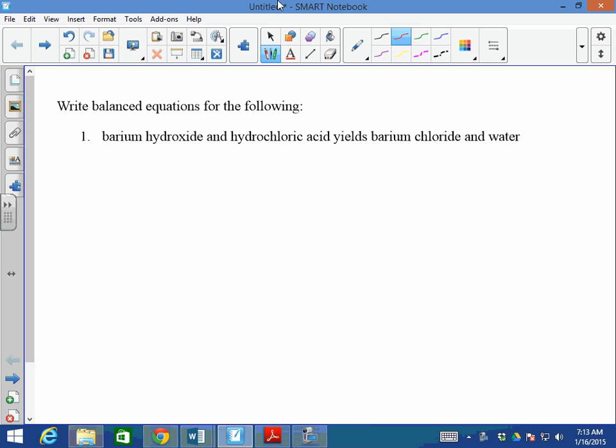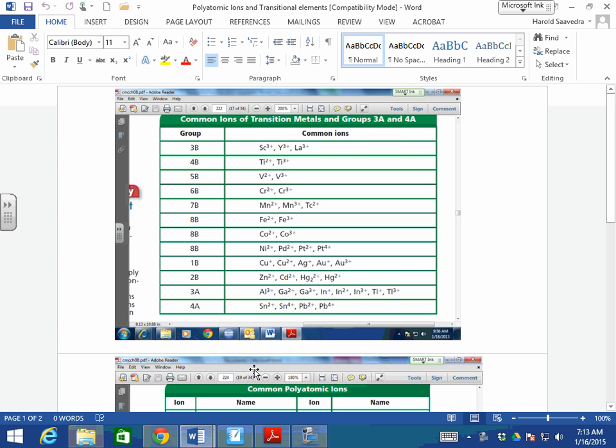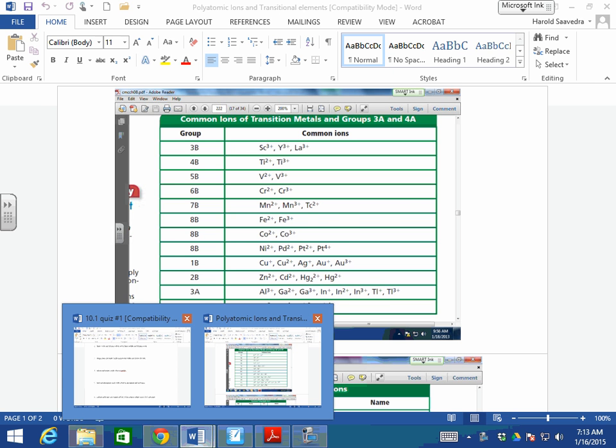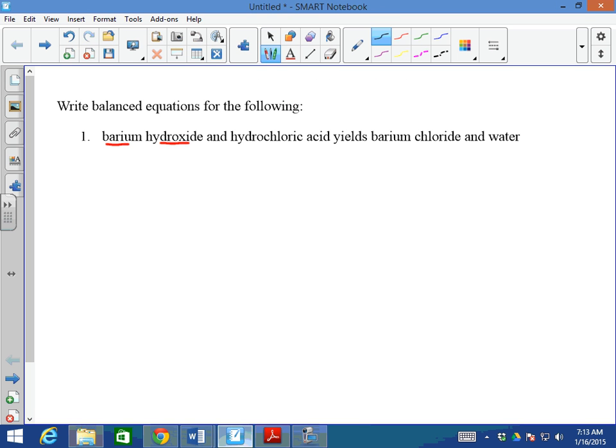Barium hydroxide. If I go to my chart and look for barium, I can see that barium itself is found in group number 2. If it's in group number 2, therefore it has a charge of 2 plus because it is a metal. I cheat myself and write charge of 2.